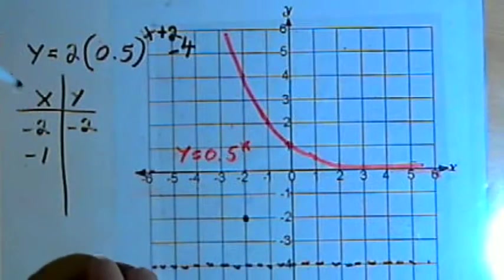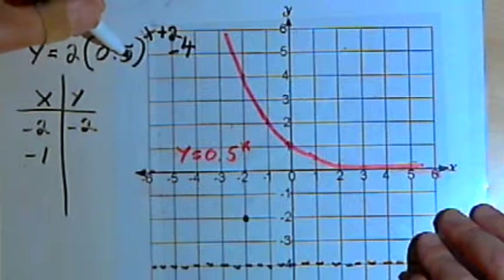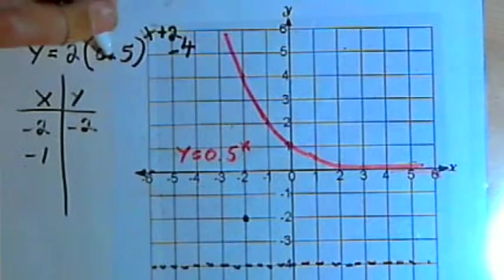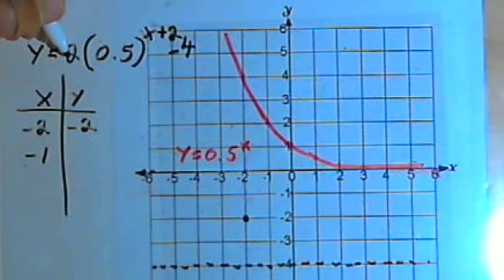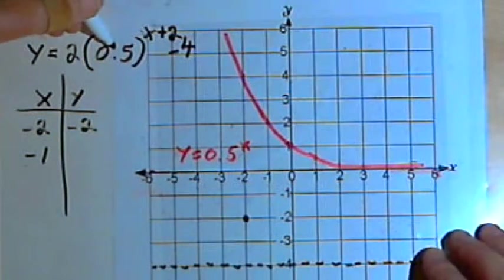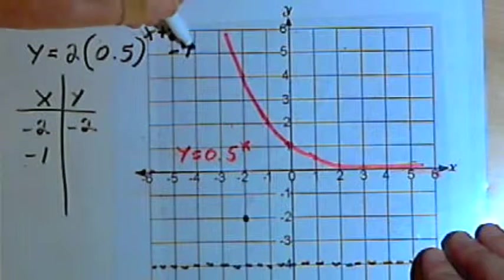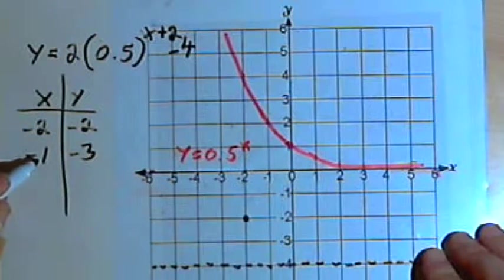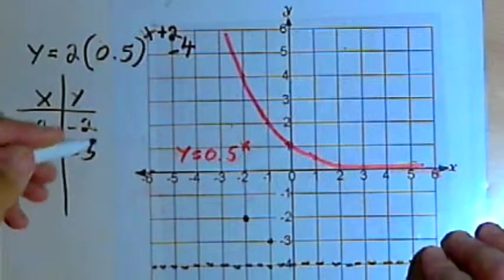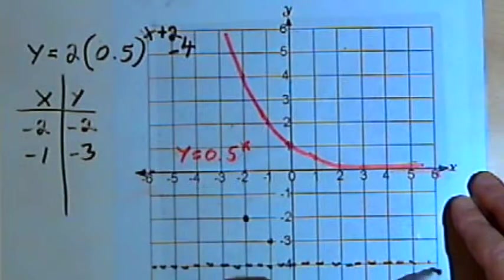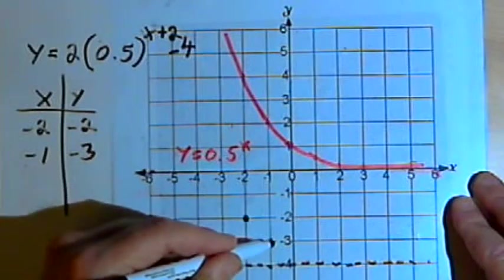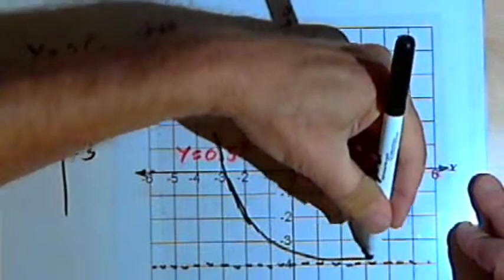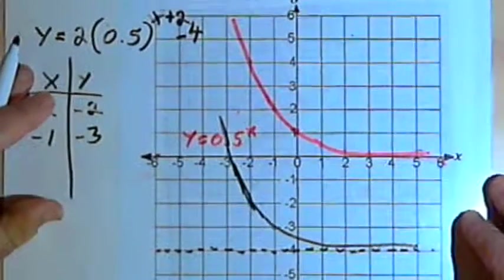Let's go on to negative 1. If x is negative 1, then I've got 0.5 to the first power, which is just 0.5. When I multiply that by 2, 2 times 0.5 is 1, and 1 minus 4 is negative 3. So I'm going to have another point at negative 1 comma negative 3. I know my graph is curving downwards, and I know where the horizontal asymptote is, so I can take those two points and sketch in a rough curve to get a general idea of what this is going to look like.